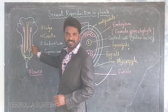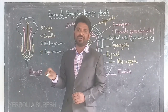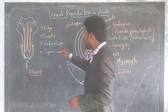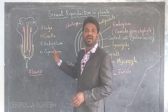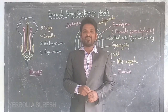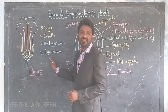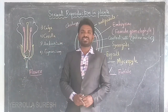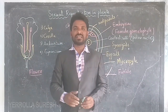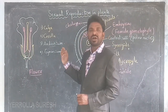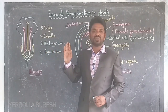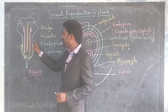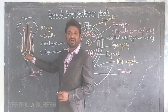The main parts of the flower are the androecium and gynoecium. Androecium means the group of stamens — all the stamens present in a flower together are known as the androecium, and it is treated as the male reproductive system of the flower. The gynoecium is the central part of the flower, also called the pistil, and it is the female reproductive system.